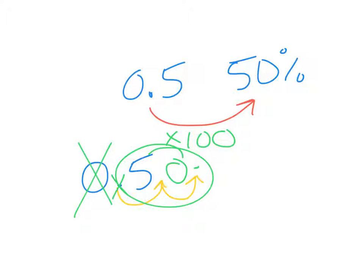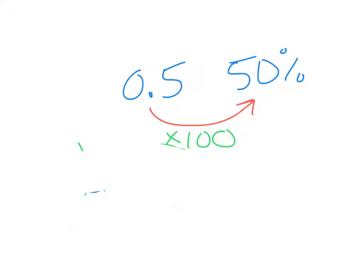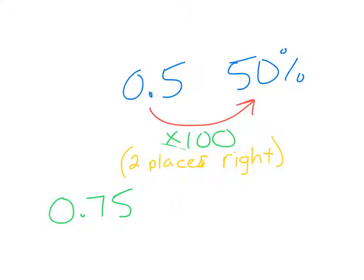So really that's all you have to remember. To convert a decimal to a percent, move your decimal two places to the right. For example, to convert 0.75 to a percent: move the decimal 1, 2 places to the right — it's now at the end, making it a whole number, so that would be 75%.